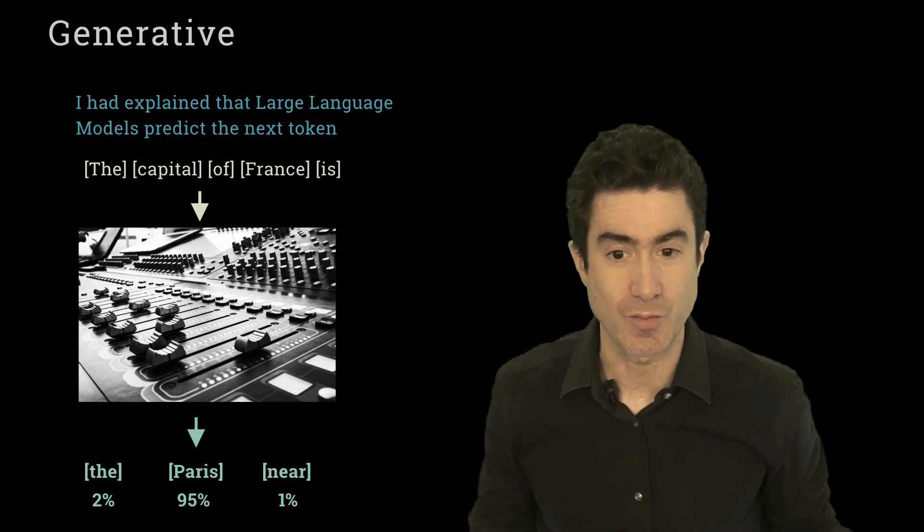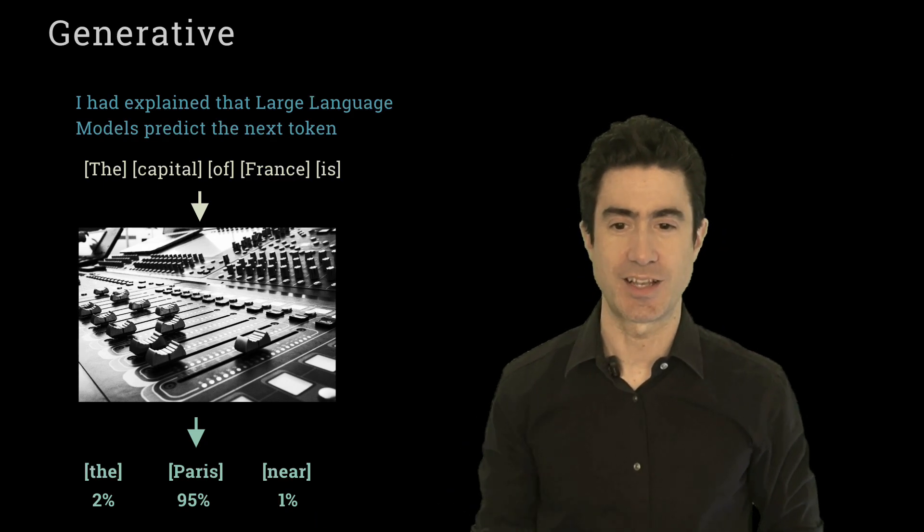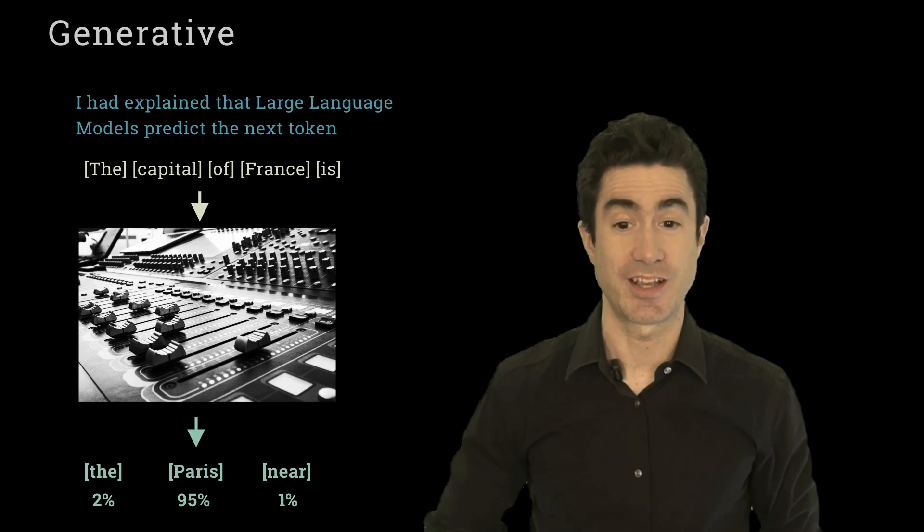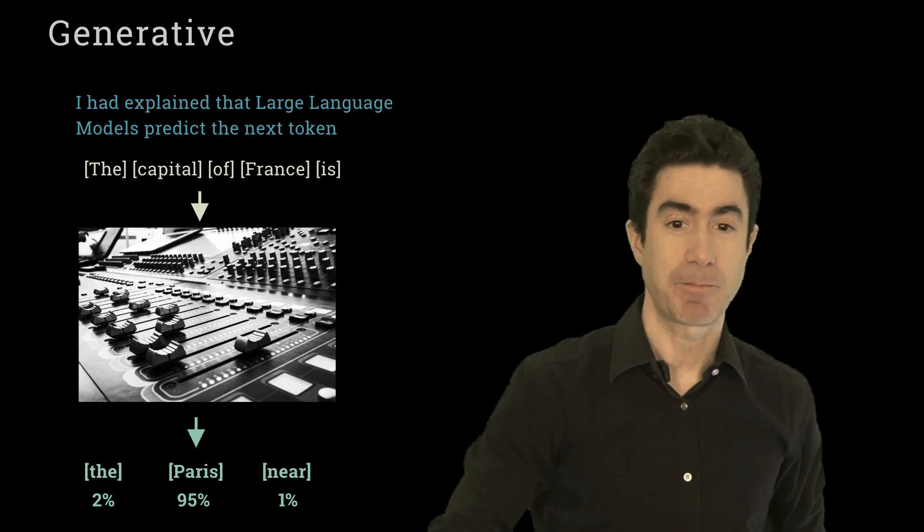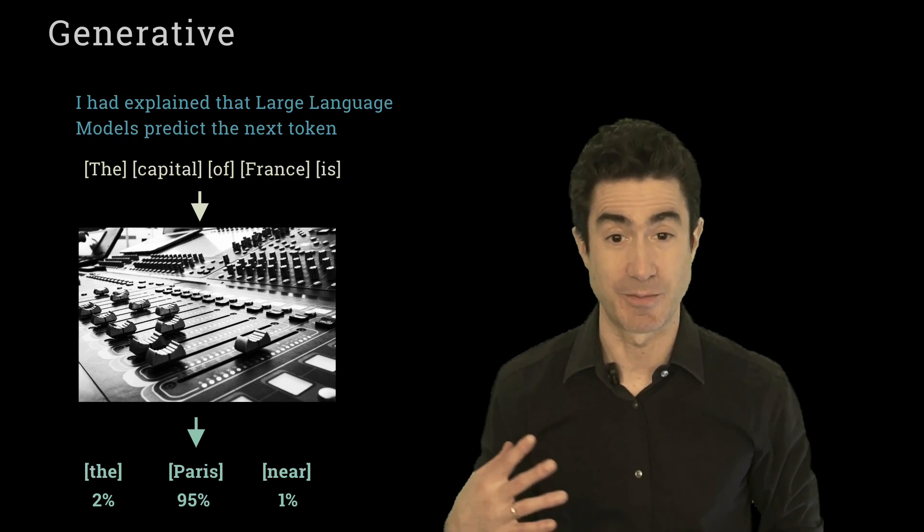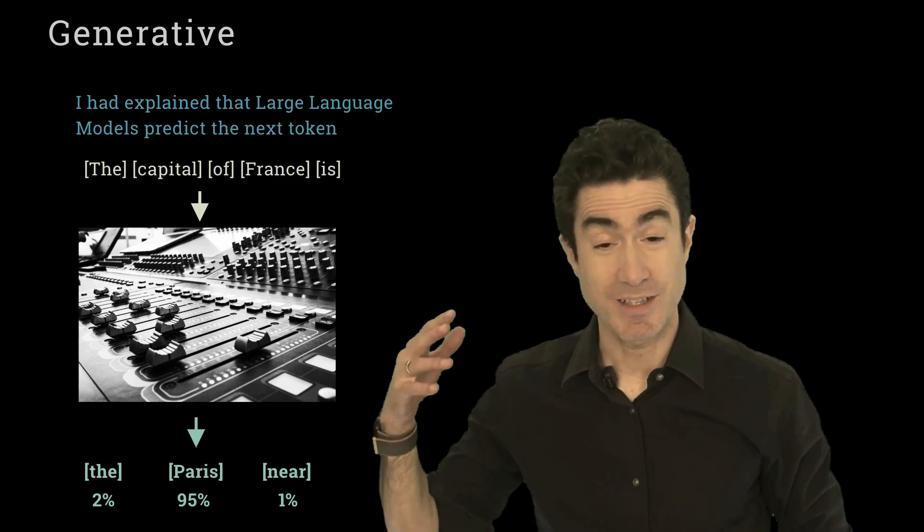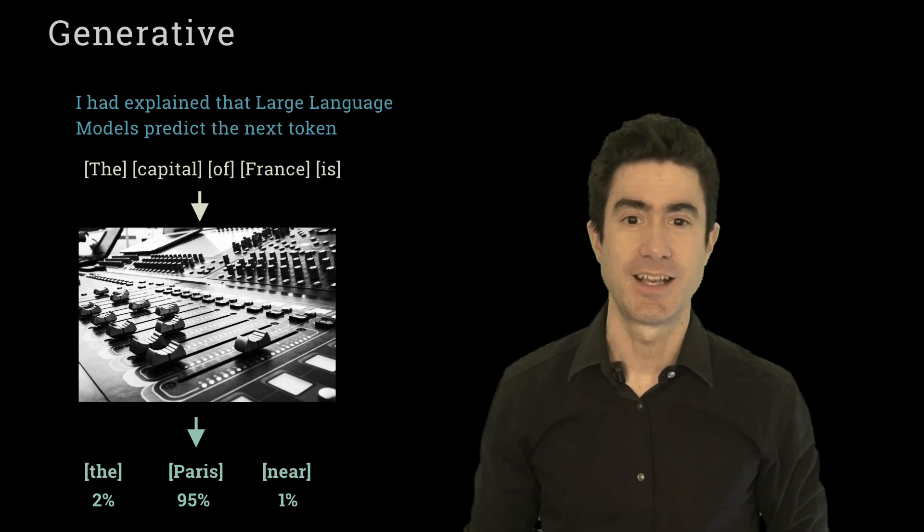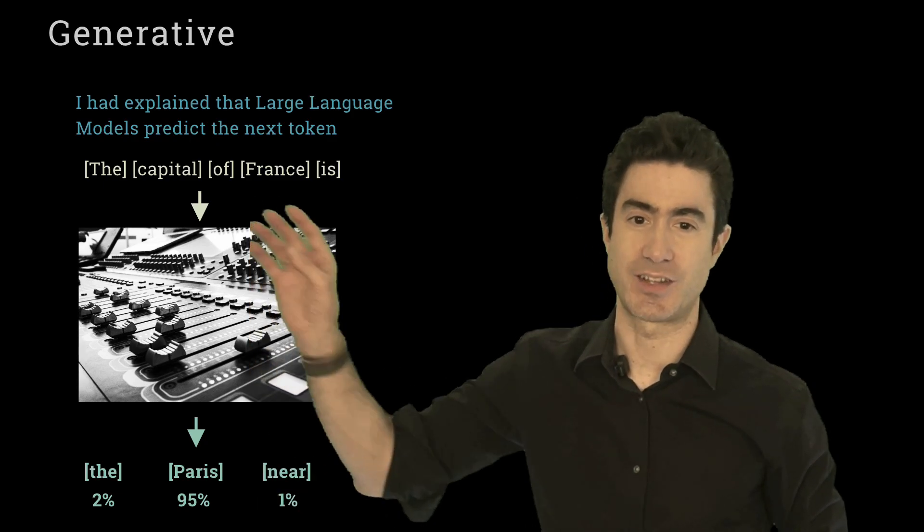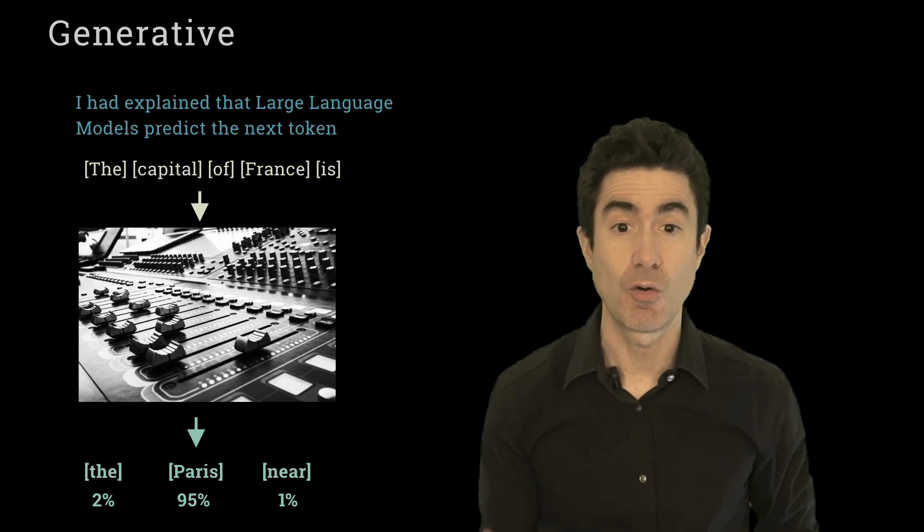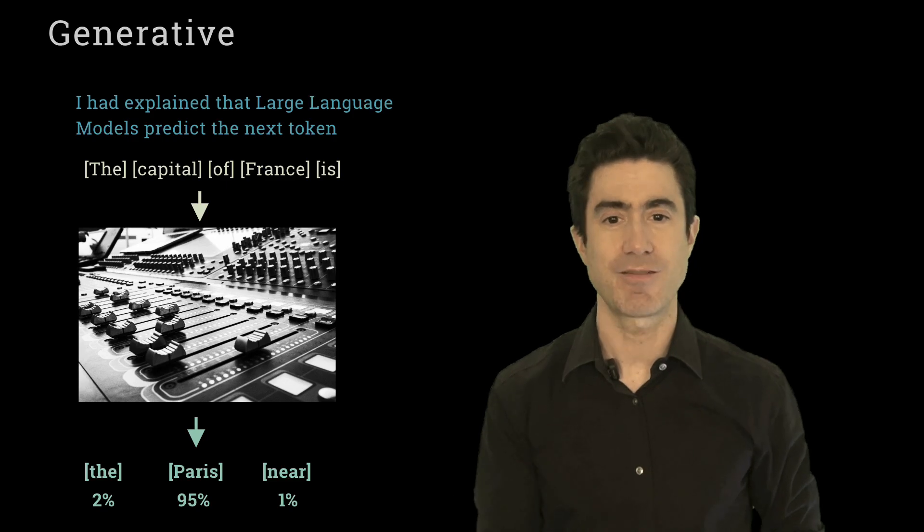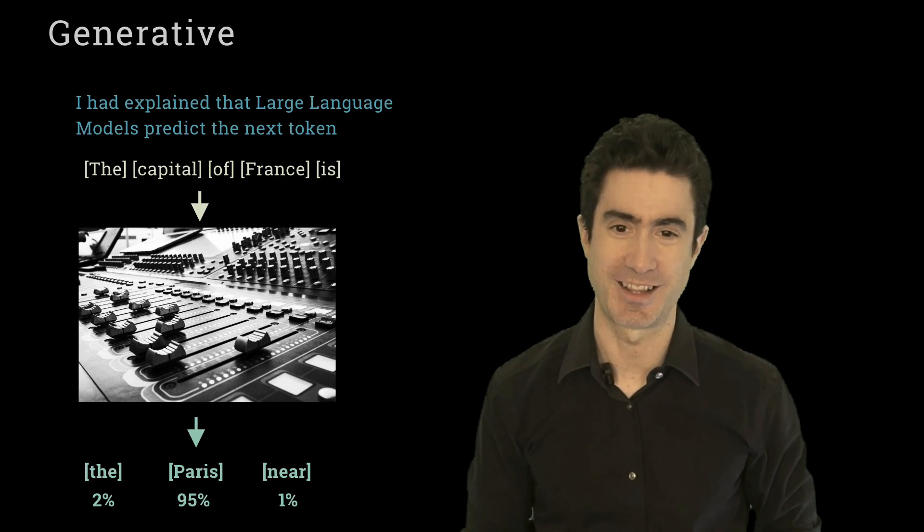But there could be other words as well. This could be a sentence which is saying something like the capital of France is near. Or it could be something which is saying the capital of France is the followed by something that comes after that. And so words like the and near might get a small percentage probability as well. And there might be lots of other words that get a tiny probability. All the different ways that perhaps this sentence could be extended with Paris, presumably being the most likely.